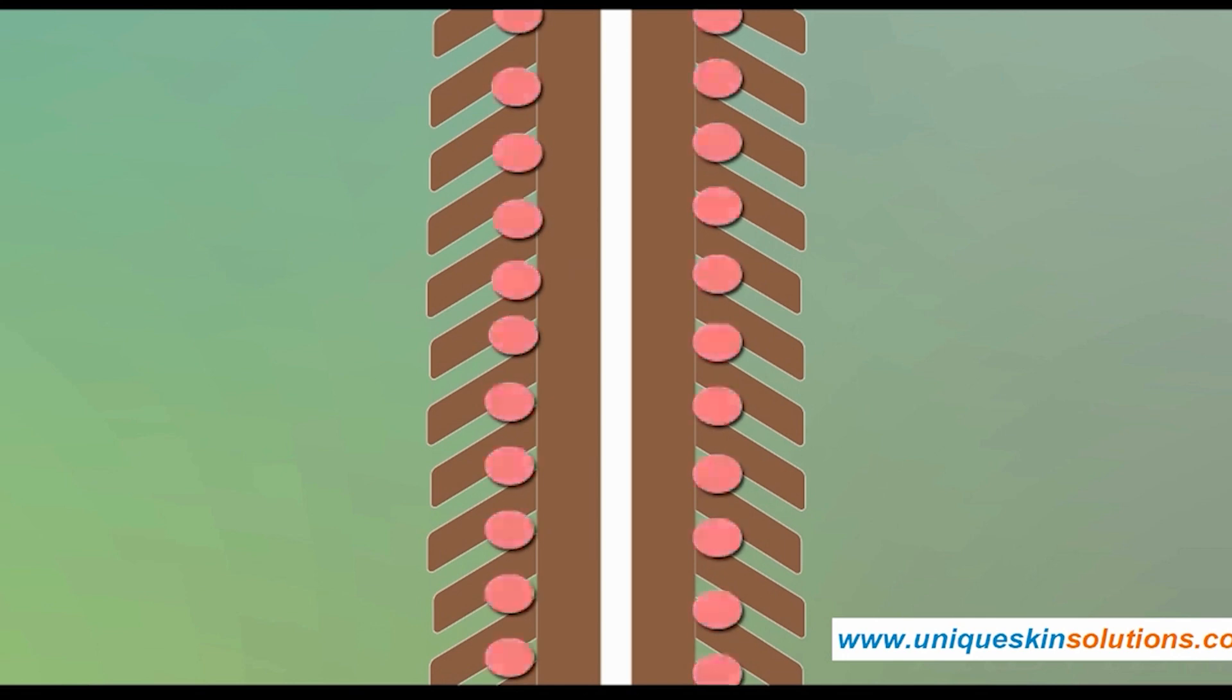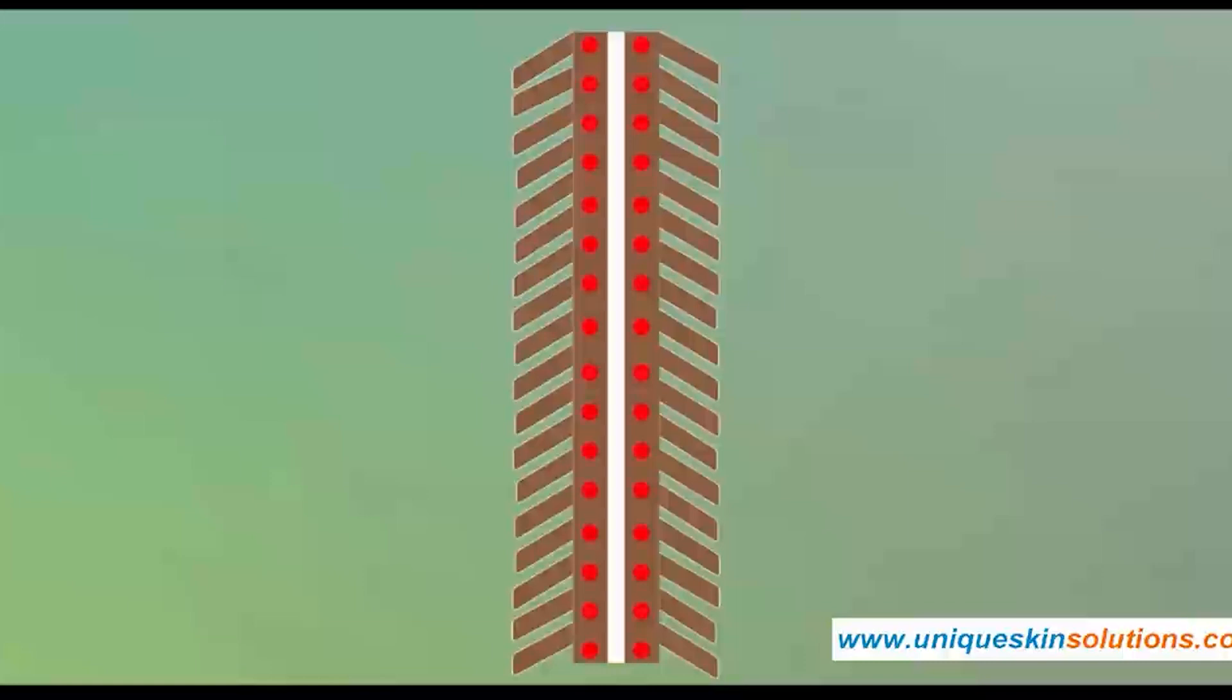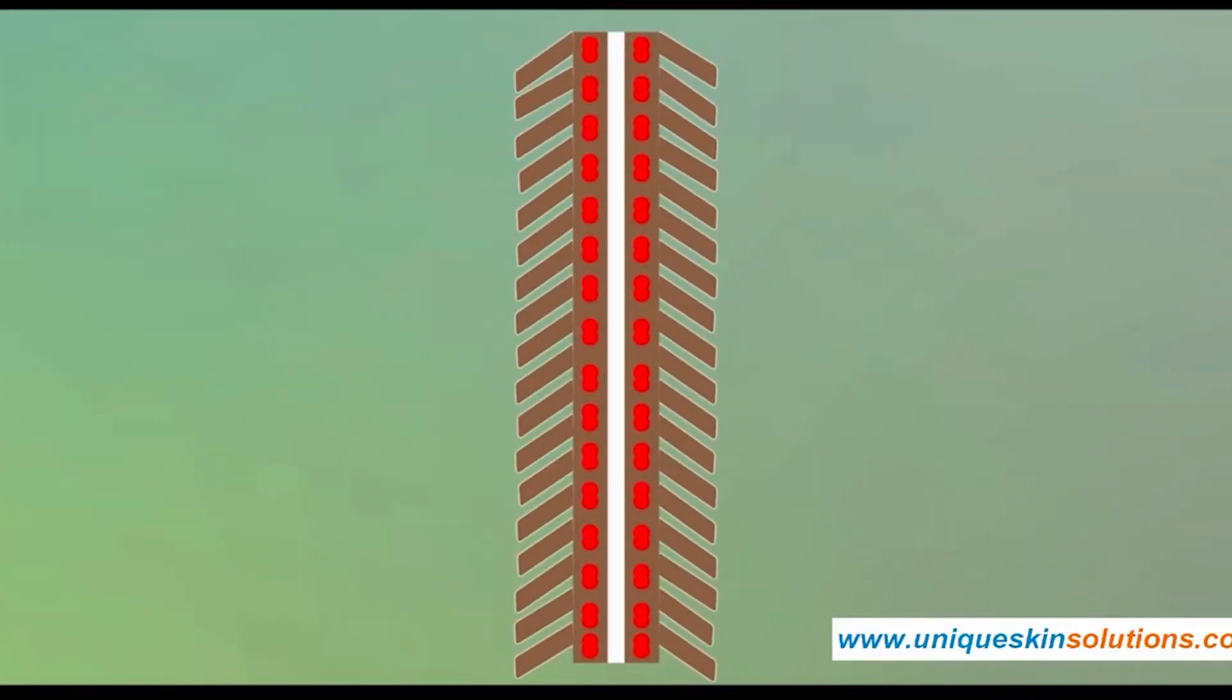That's how permanent color resists fading through multiple washes - it's trapped beneath the cuticle. So that's it, that's how hair dye works.